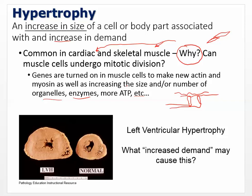Left ventricular hypertrophy is what we see here. The one on the right is normal. You can see a very thick ventricle on the left. An important thing to notice: when this muscle gets larger during left ventricular hypertrophy, the amount of space to hold blood actually becomes smaller. So you have a reduced amount of space inside the ventricle. The muscle thickness is greater, but the chamber volume is reduced.